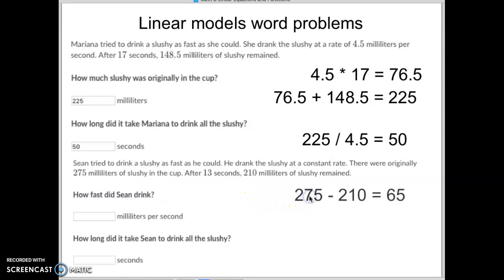The first thing we do is we want to start with there was 275 milliliters when we started. We subtract away the 210 that remains to know that in 13 seconds he was able to drink 65 milliliters of slushie.